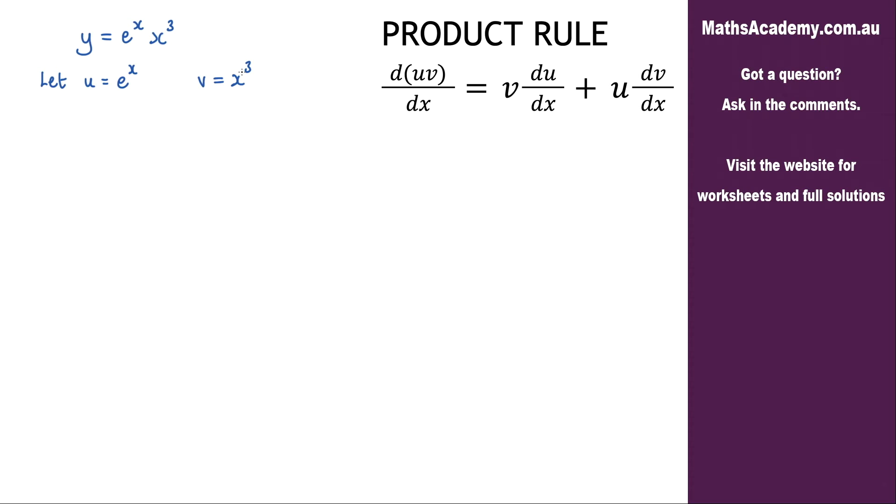We then go ahead and differentiate both of those. So du by dx, that's going to be e to the x, and dv by dx, that's going to be equal to 3x squared.